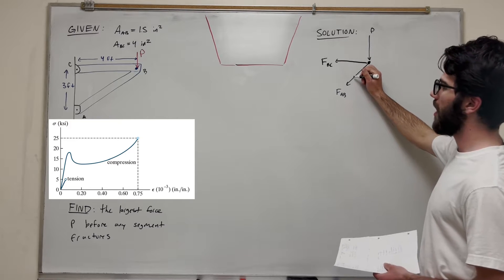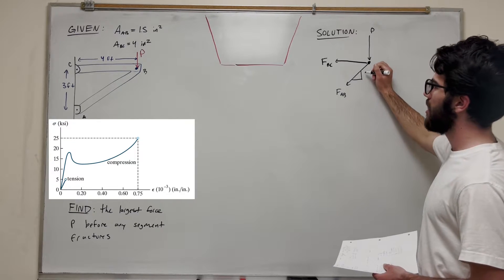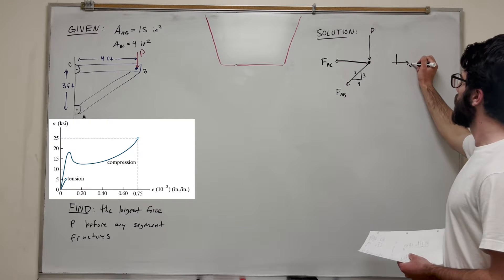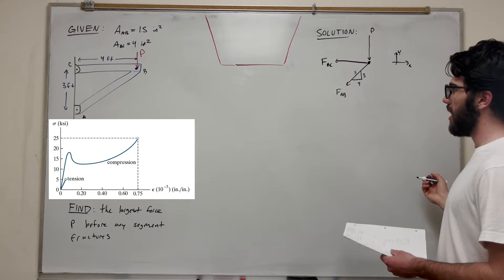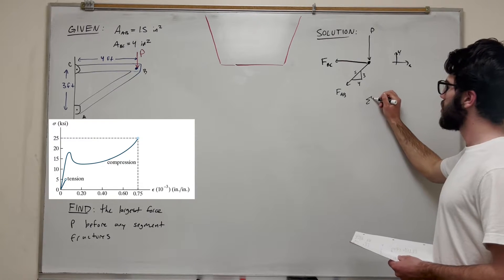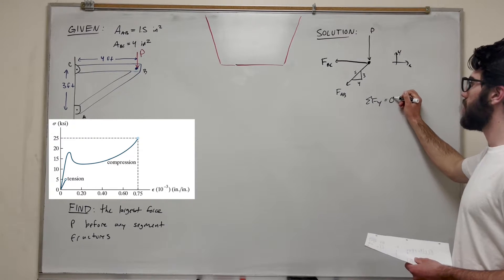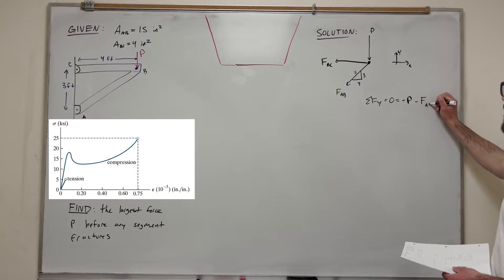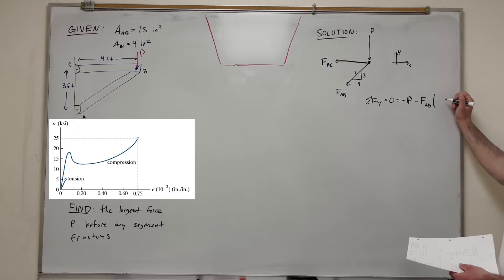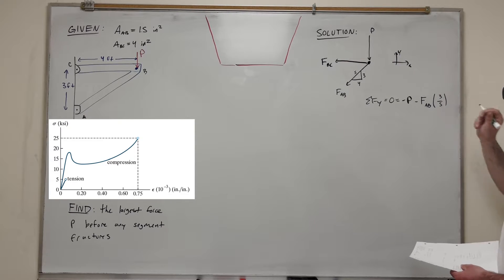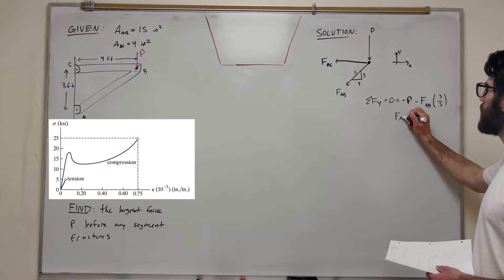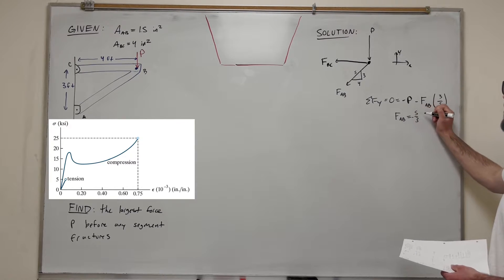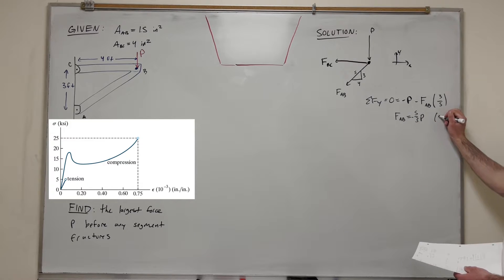We know that this is a 3-4-5 triangle — we can see pretty easily that this side is 3, this is 4, and this is 5. So let's take the sum of the forces in the Y direction, which equals zero: negative P minus force AB times 3/5 equals zero. Rearranging, we get that force AB equals negative 5/3 P. So this tells us that force AB is in compression.